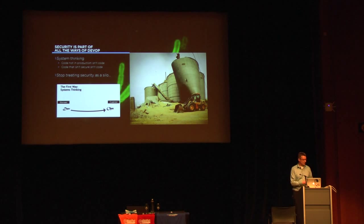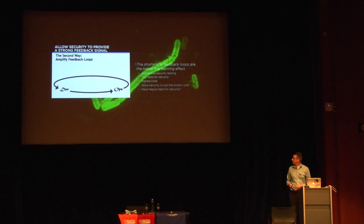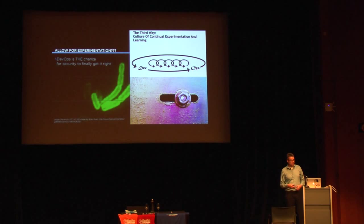We need to stop treating security like it's a special department. We need to close and amplify our feedback loops — make sure that if we do something stupid, something will prevent it. Measure everything, use those measurements to prevent mistakes, allow for experimentation. Security can't be bolted on; it should be built in and become a normal process.